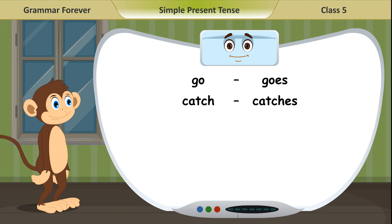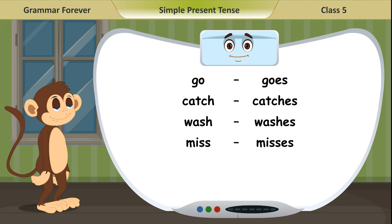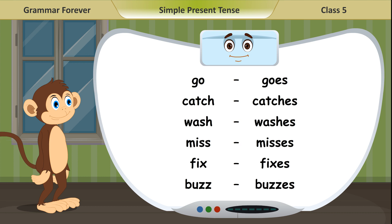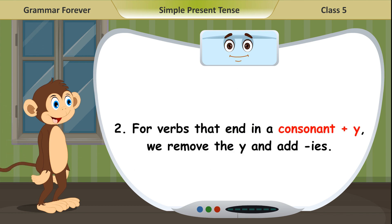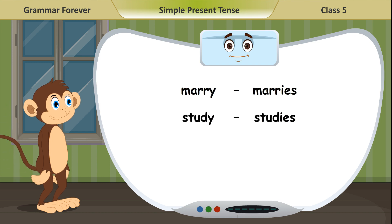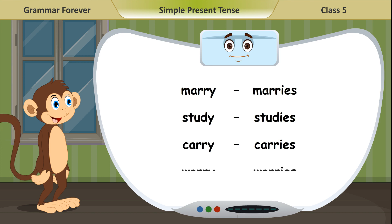For verbs that end in a consonant plus Y, we remove the Y and add IES. Examples: Marry — marries. Study — studies. Carry — carries. Worry — worries.